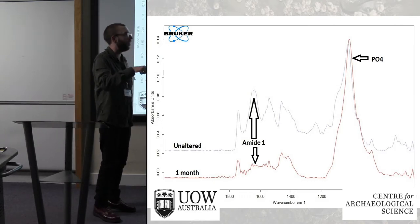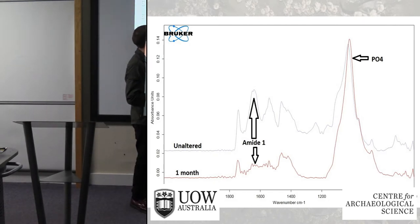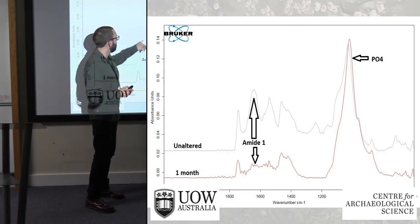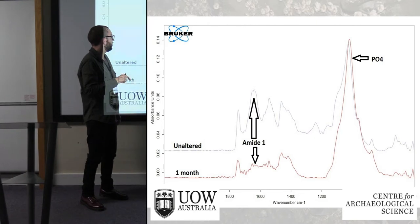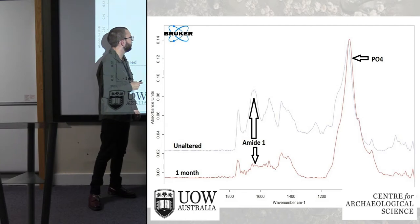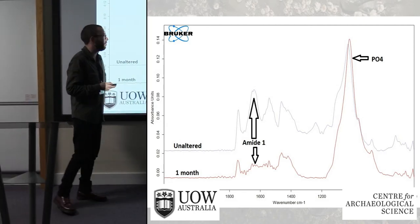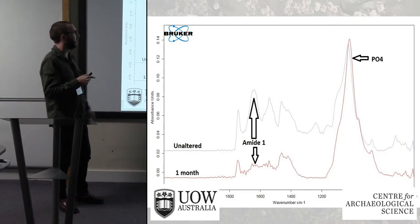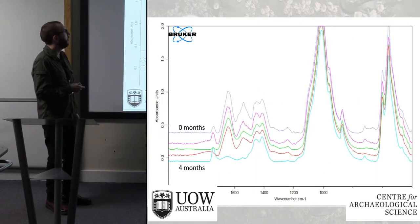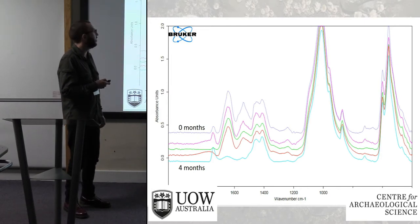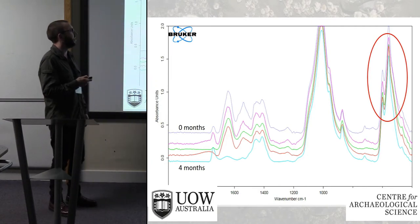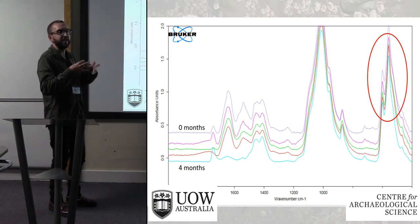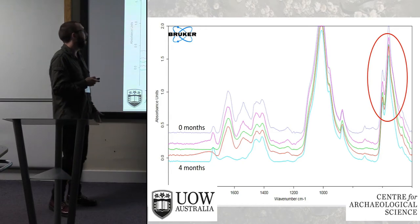We use FTIR to look at the relative concentrations of collagen and phosphate mineral. The mineral-to-collagen ratio is assessed by the area under the phosphate peak and the area under the amide I peak, which is representative of collagen. After just one month, from the external FTIR microscope analysis, the amide I peak is virtually non-existent. There's also a slight shift indicating some mineralogical change, though the FTIR microscope has a restricted range. On the powder ATR-FTIR, peak height ratios can indicate increasing crystallinity in the mineral fraction.